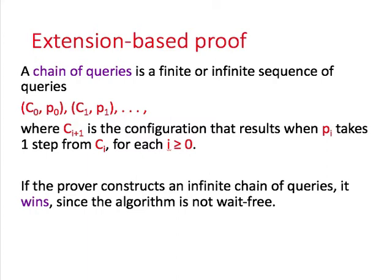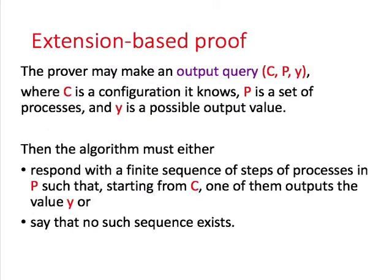It is possible to make a valency proof fit into this framework, but it is a bit cumbersome. Instead, we add one more type of query: the output query. For an output query, the prover chooses a configuration c it knows, a set of processes p, and a possible output value y. The algorithm can respond with a finite sequence of steps by processes in p such that starting from c, one of them outputs the value y — or it can say no such sequence exists. For example, the output queries c, p, 0 and c, p, 1 with p being all processes together tell the prover whether configuration c is bivalent.